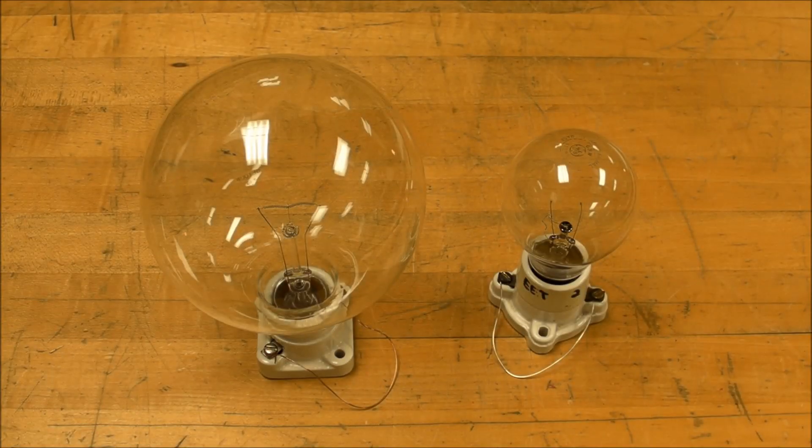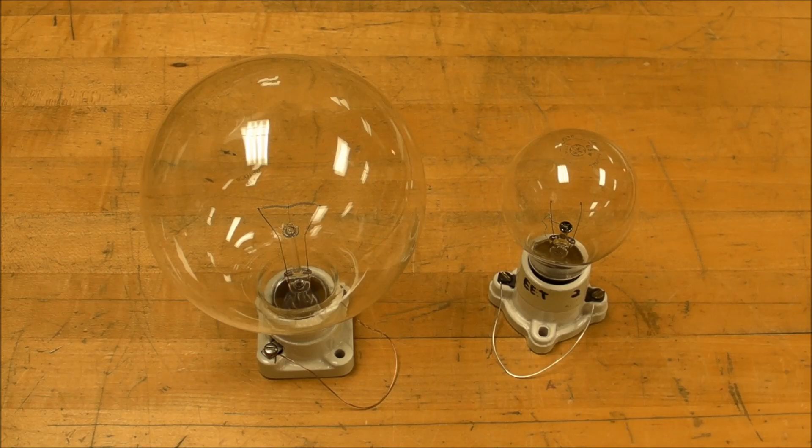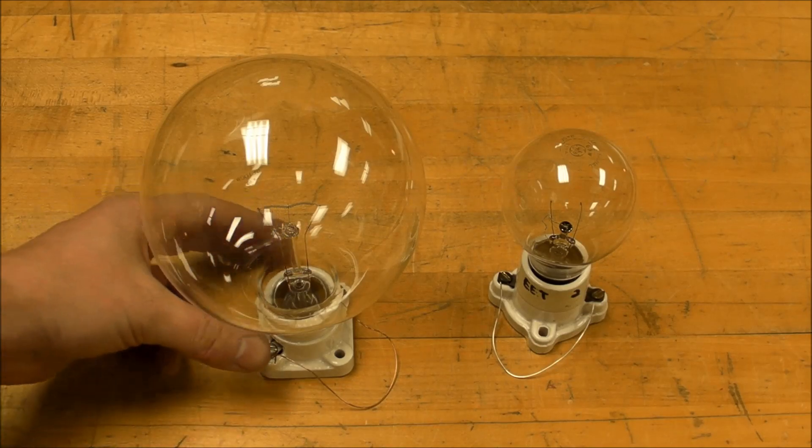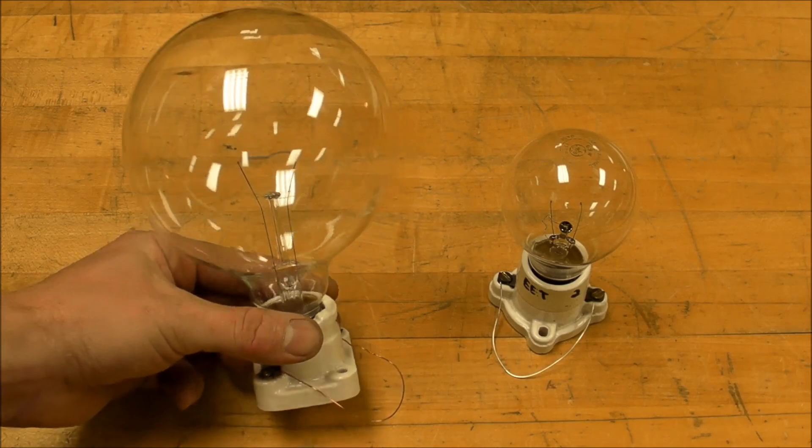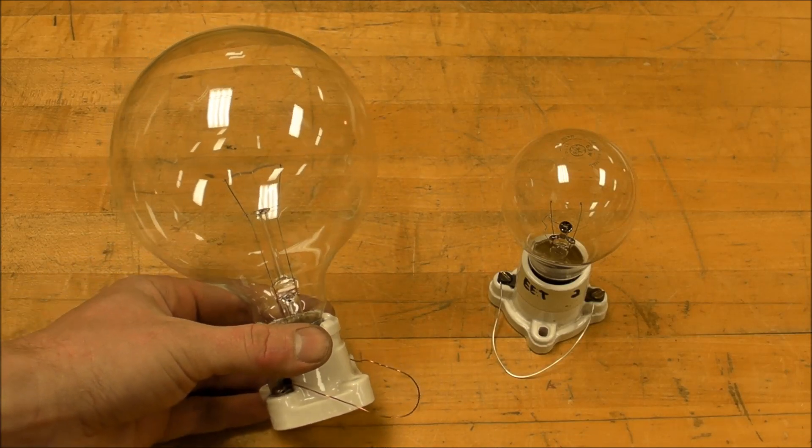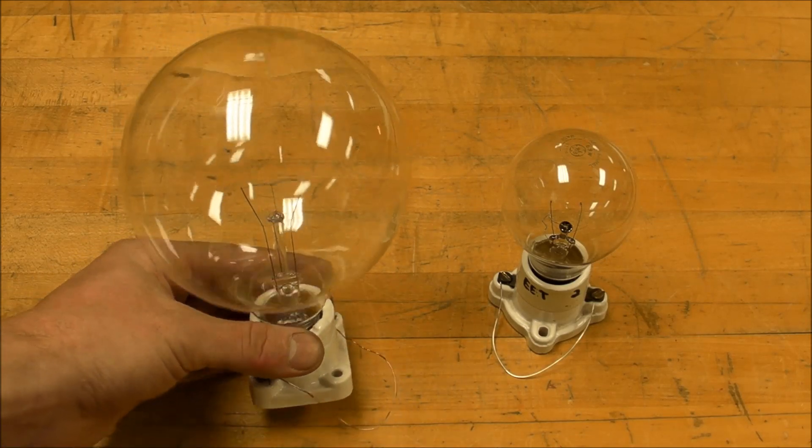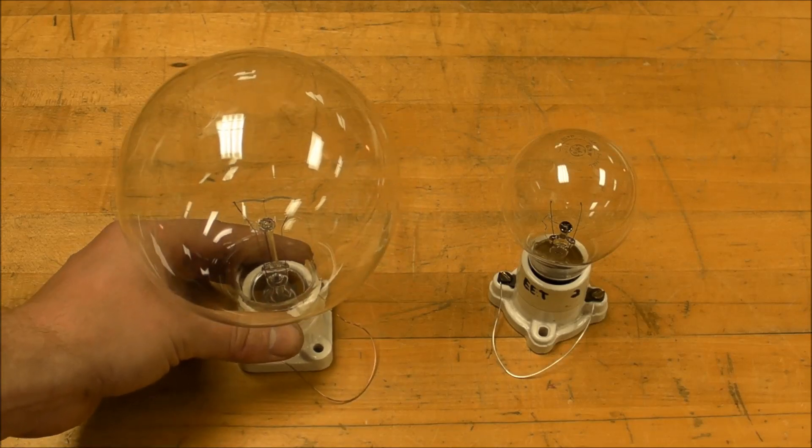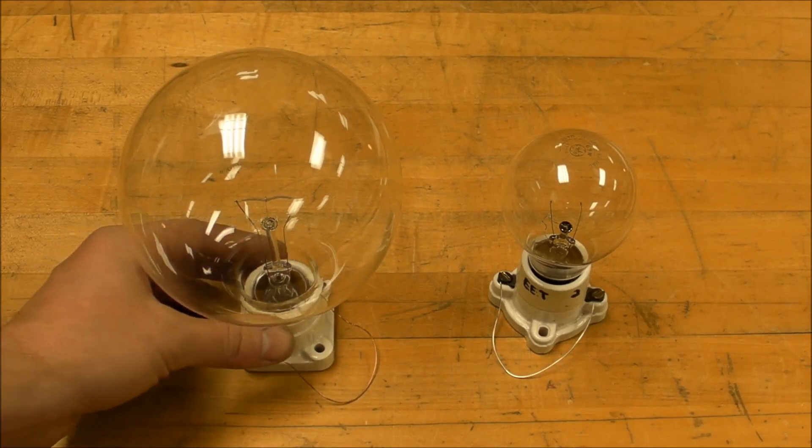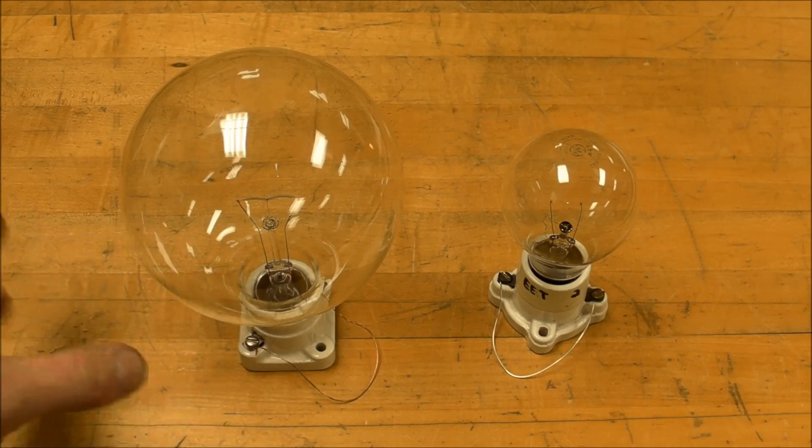Hey this is Electronic Tonic and on today's episode of Stuff on a Tesla Coil I've got a couple of light bulbs that we can make some plasma balls out of. This is a 100 watt globe lamp and I'm just going to turn up the Tesla coil a little bit to get the nice plasma effect inside.